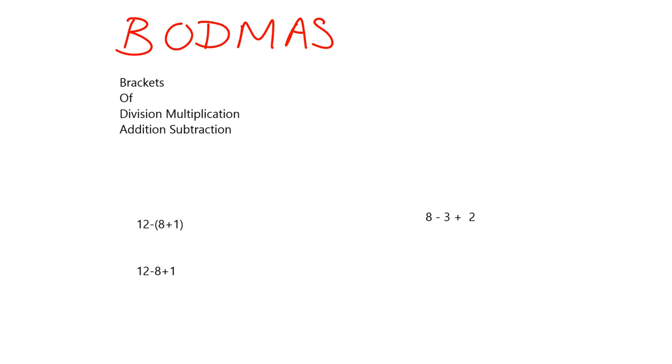Quick reminder: what does BODMAS stand for? The B is for brackets, the O for of, but we're not really going to use that so much. The important ones are—first we do brackets, and after we've dealt with brackets we deal with division and multiplication. These are at the same level, so division is not more important than multiplication, they're at the same level, but division and multiplication both come before addition and subtraction, which are again at the same level.